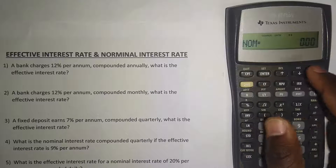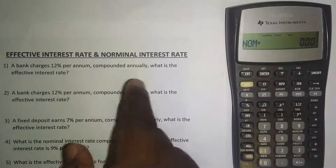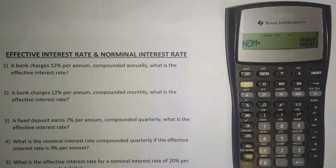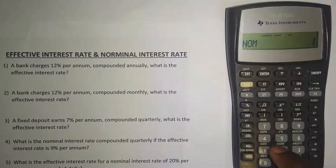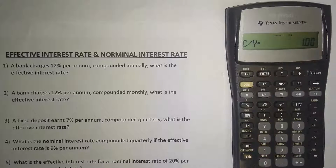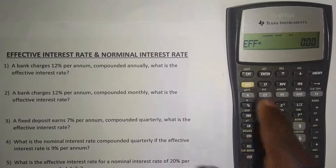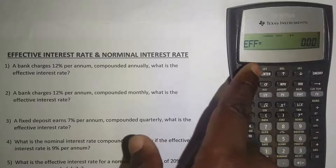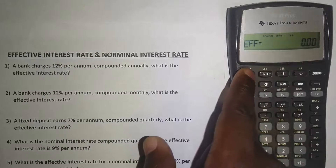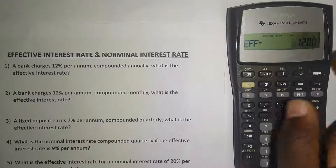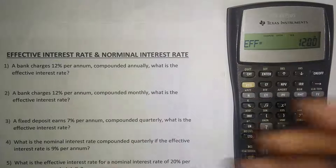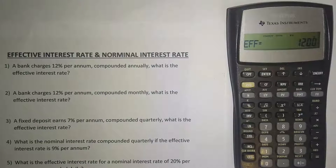For Example 1 — a bank charges 12 percent per annum compounded annually — the nominal interest rate is 12. Enter 12 and press Enter. Press the upward arrow to get to compounding per year, enter 1, and press Enter. Press the upward arrow again, then press CPT — the top-left button on the calculator — and it gives you the effective interest rate of 12. As expected, annual compounding means nominal and effective are always the same.